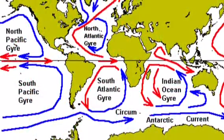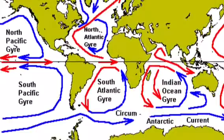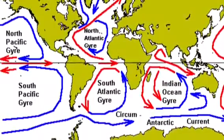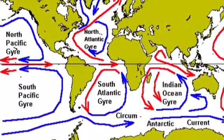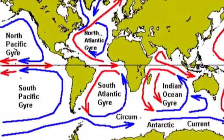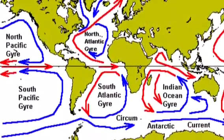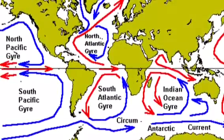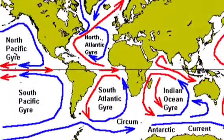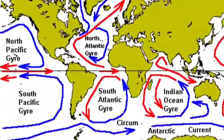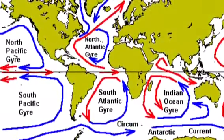Ocean circulation is the movement of hot and cold water. Since the earth is always rotating, the water is pushed to the southern and northern hemispheres, moved by wind, which changes the sea level.